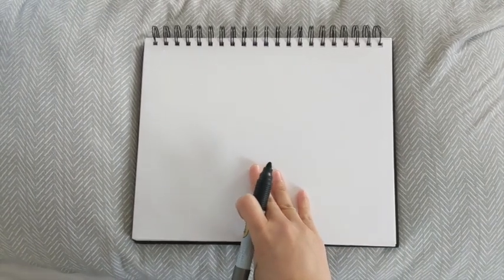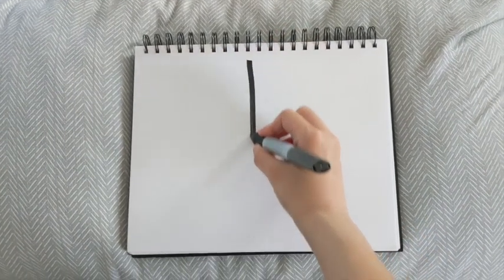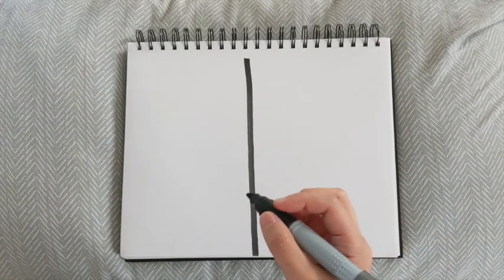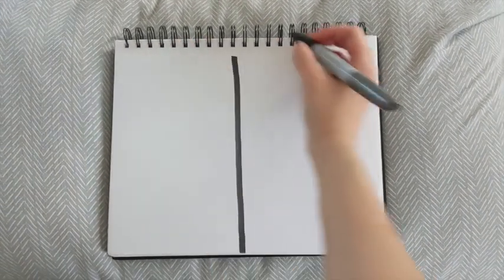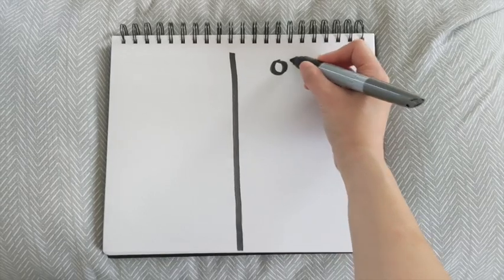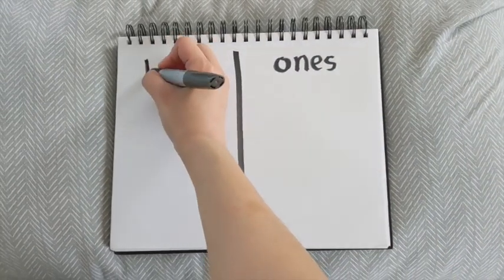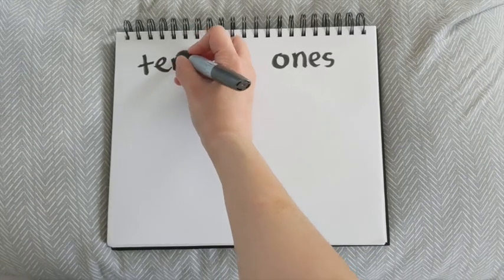To play this game, you're going to need a couple of things first. One is a game board. So grab a piece of paper or a notebook like mine, and go ahead and draw a line down the middle to make your place value chart game board. You're going to label it ones on this side and tens on the other side.